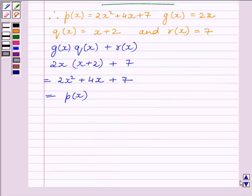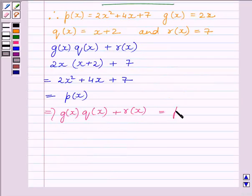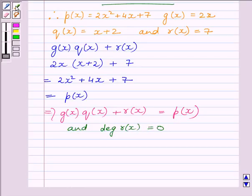This implies Gx multiplied by Qx plus Rx is equal to Px. And the degree of Rx is equal to 0, as we can see here.